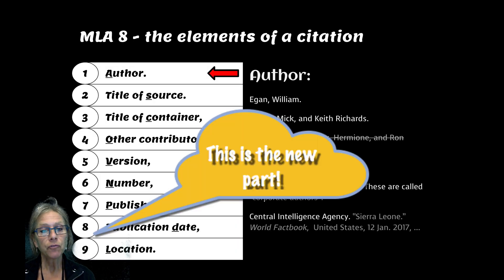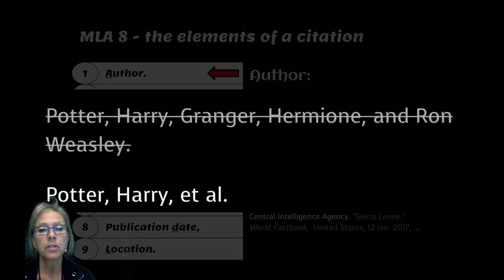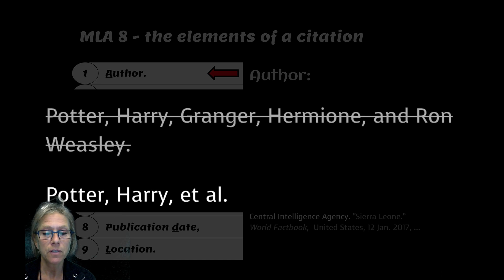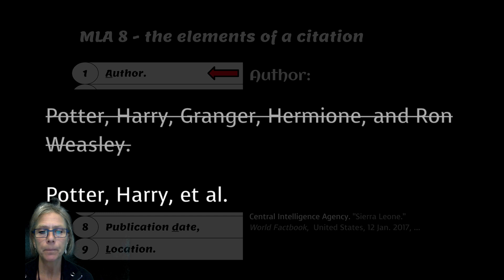If you have three or more authors, you are only going to mention the first author, and then place a comma after the first name, and spell out ET space AL period — et al. — which means 'and others' in Latin.